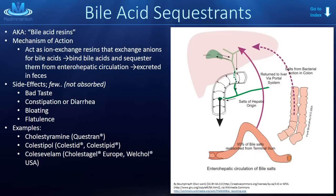The side effects for bile acid sequestrants are few, because these drugs are not absorbed systemically — they are meant to pass through the GI system taking bile salts with them. Most often, patients complain of a bad taste, constipation, diarrhea, bloating, or flatulence, but they are usually well tolerated. Examples include cholestyramine, colestipol, and colesevelam.